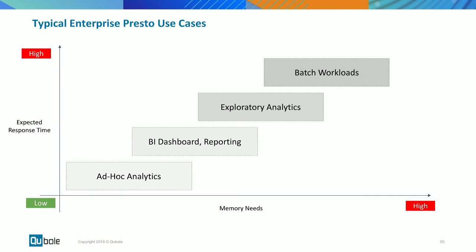For batch workloads, Facebook uses Presto, but in the industry people also use Spark, Airflow, or whatever engine suits the workload. For batch, response time doesn't matter since you have a scheduled job completing the ingestion. So that sits at the top of the chart. These are the different categories of typical use cases.